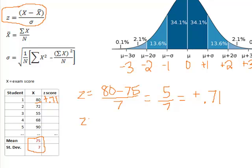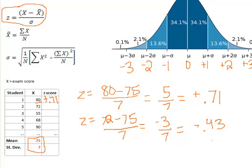We can go on and calculate the z-score for 72. We take 72, subtract 75, divide by 7, and we get negative 3 over 7. Don't drop that negative sign — it's important because it tells us the direction above or below the mean. In this case, negative 3 over 7 ends up being negative 0.43. So that means if a student has a raw score of 72, their z-score is negative 0.43, which means their score falls 0.43 standard deviations below the mean — within that 68 percentile range of plus or minus one standard deviation.